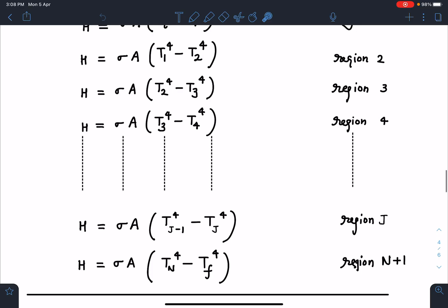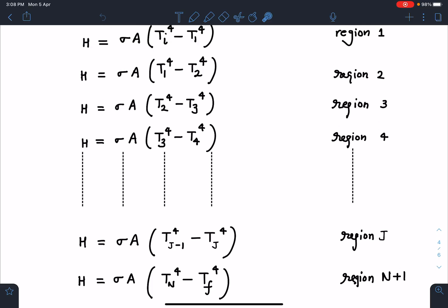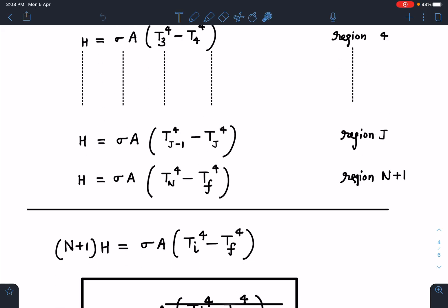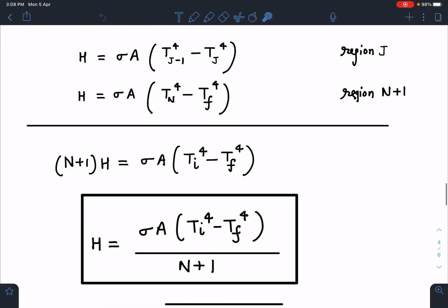If you add all these equations you will see very beautifully these terms are going to get cancelled. They are going to get cancelled here and finally this also will get cancelled. So total N plus 1 number of equations are there. N plus 1 times H is equal to sigma A Ti to the power 4 minus T final to the power 4. And from here H value I can find out. This is the net heat flux or net rate of energy transfer from one plate to another plate here.